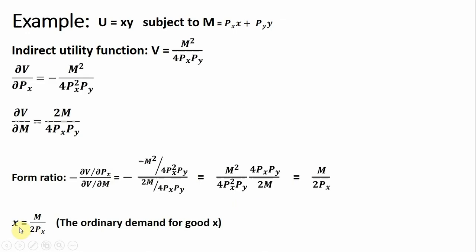So rewriting the demand for good x, given this utility setup, is simply income divided by 2 times the price of good x. If we wanted to get the demand for good y, we could essentially do the same thing — the only difference is that we would take the partial derivative of the indirect utility function with respect to the price of good y. I hope you found this video helpful.